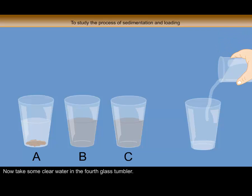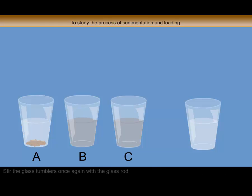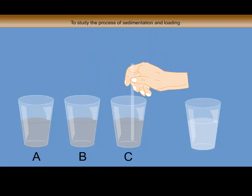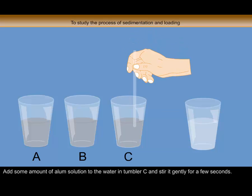Now take some clear water in the fourth glass tumbler. Take a little amount of alum and dissolve it in the water to prepare alum solution. Stir the glass tumblers once again with the glass rod. Add some amount of alum solution to the water in tumbler C and stir it gently for a few seconds.